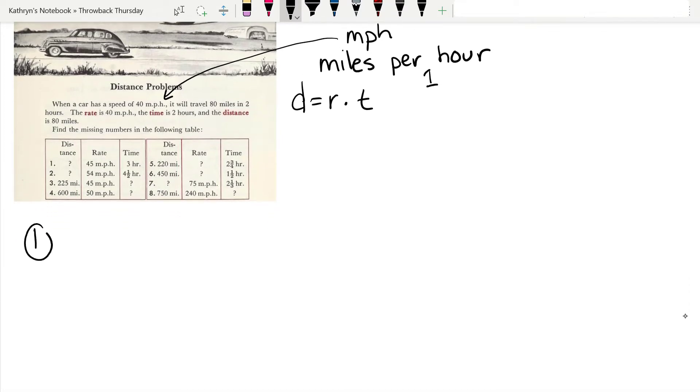Number 1. We need to find the distance. I'm going to rewrite my equation. We don't know the distance so d equals the rate, 45 miles per hour, times 3. Now all we have to do is multiply. 45 times 3: 15, 12, 13. Looks like they're going to go 135 miles.